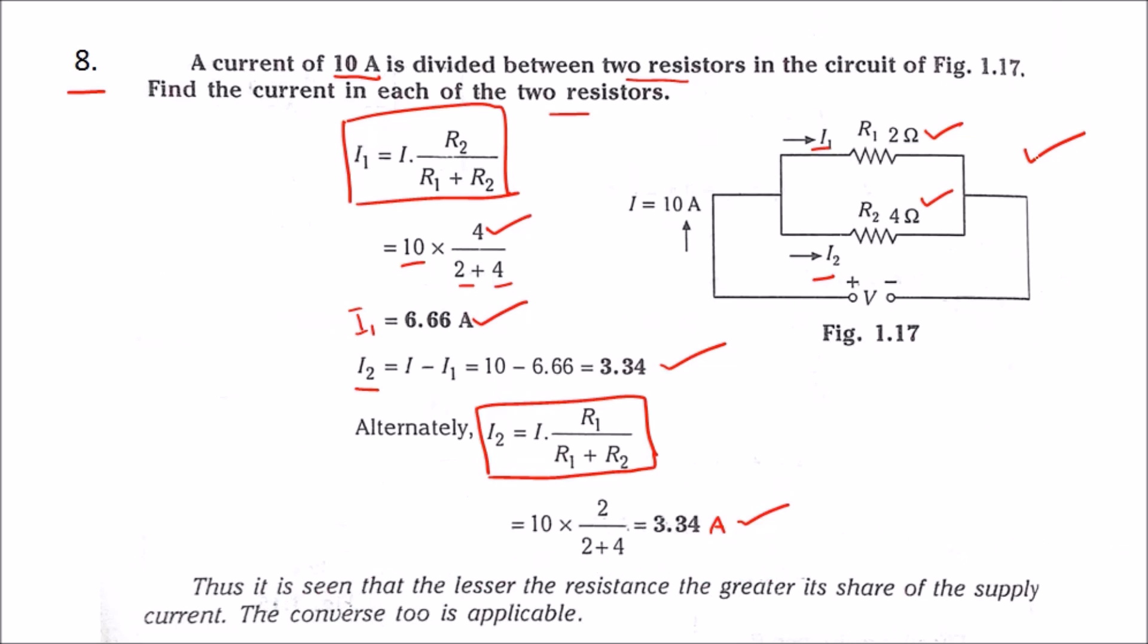So if the resistance value is less, then the current value will be more. If the resistance value is more, the current passing through that resistance will be less.